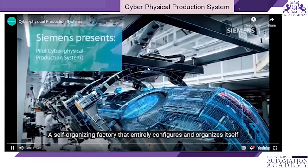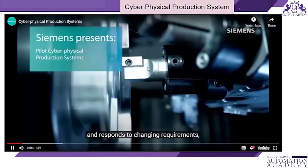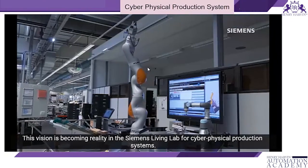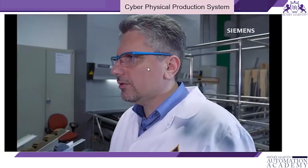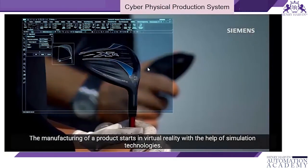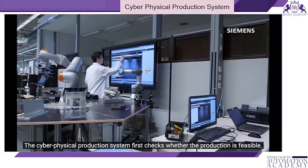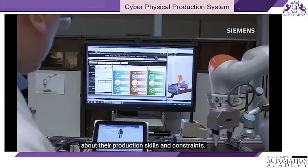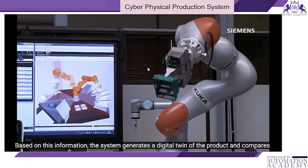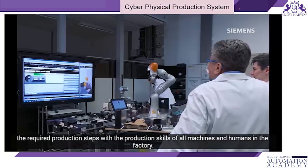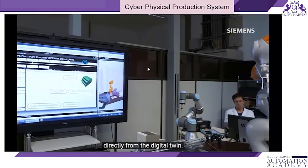Another video explains how cyber physical systems work in a production environment. In the Siemens Living Lab for Cyber Physical Production Systems, a self-organizing factory entirely configures and organizes itself, responding to changing requirements while humans and machines seamlessly collaborate. Manufacturing starts in virtual reality: simulation technologies allow the system to check whether production is feasible. Machines provide detailed information about their production skills and constraints, from which a digital twin of the product is generated and required production steps are compared with machine capabilities.